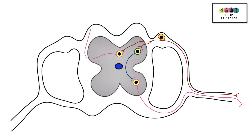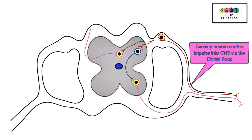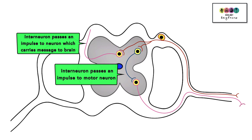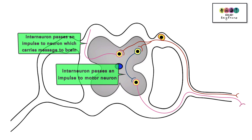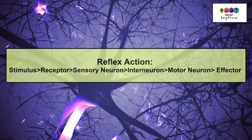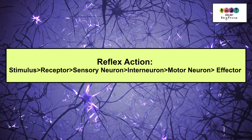In a reflex action, the stimulus is detected and the impulse is carried by a sensory neuron into the central nervous system — into the spinal cord — entering through the dorsal root. The impulse is then passed within the spinal cord to an interneuron, or relay neuron. The interneuron will then pass an impulse to a motor neuron, and at the same time pass it to a neuron which carries the information to the brain. The motor neuron carries the impulse out of the spinal cord, leaving through the ventral root. When it reaches an effector, for example a muscle, an action takes place — and just as the action takes place, the brain is made aware. The brain did not direct that action, so it's an unthinking response to a stimulus.